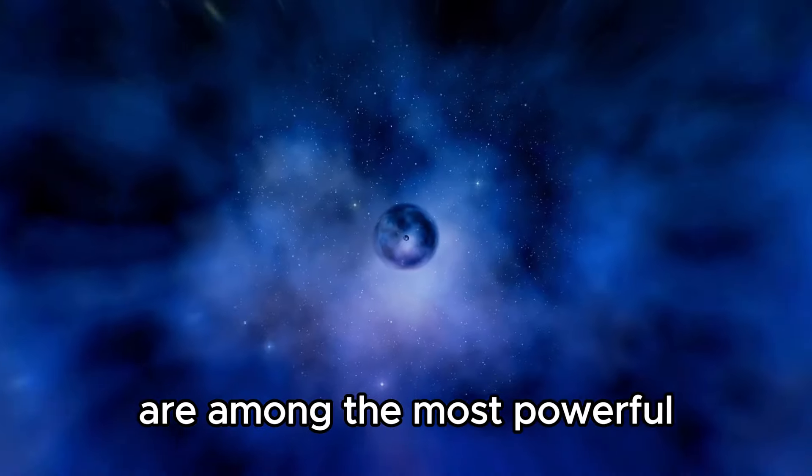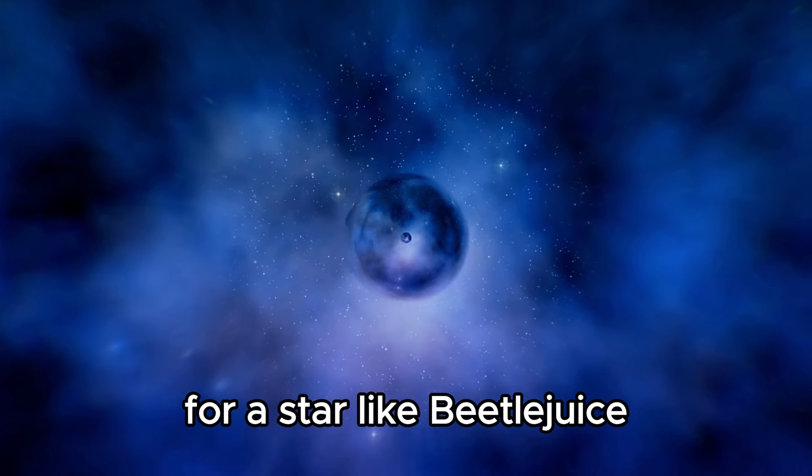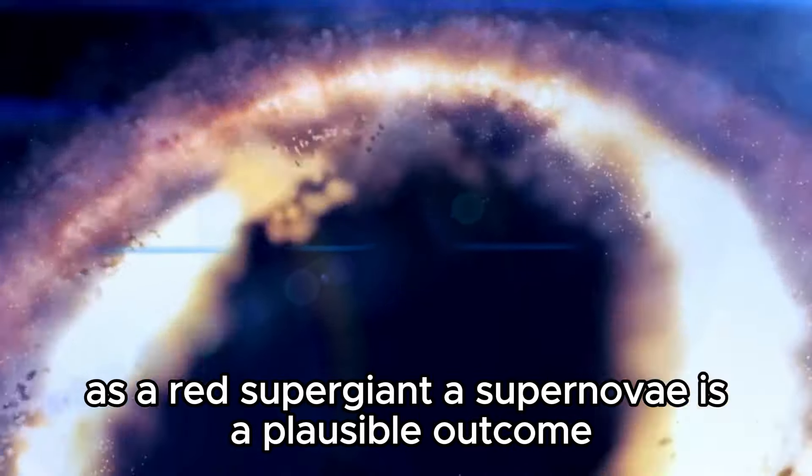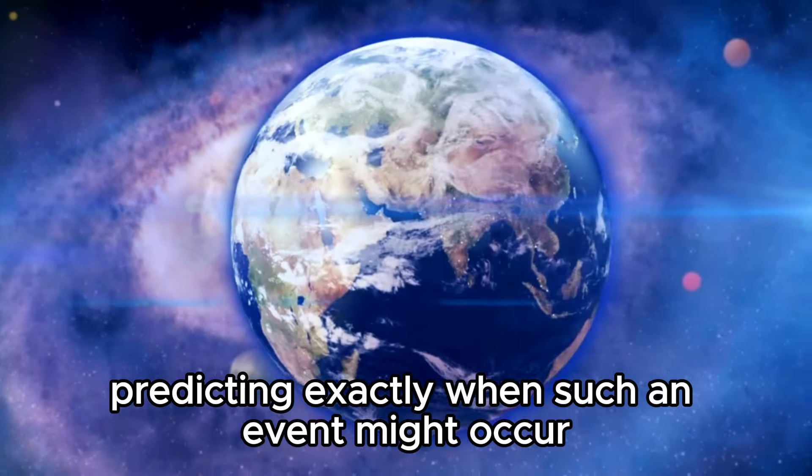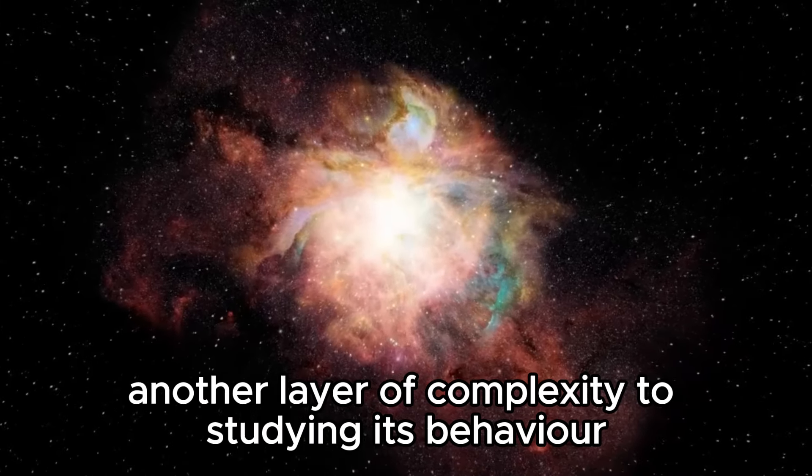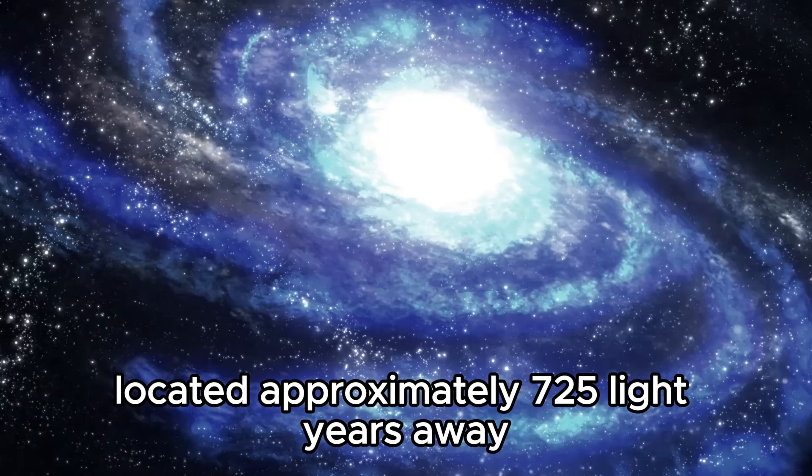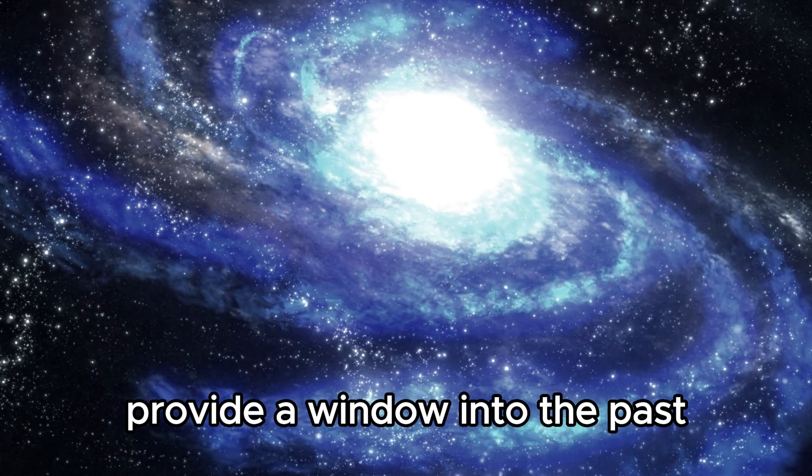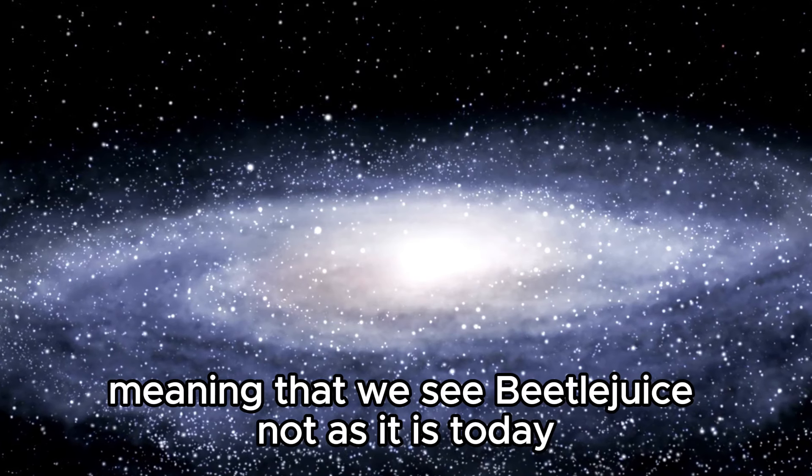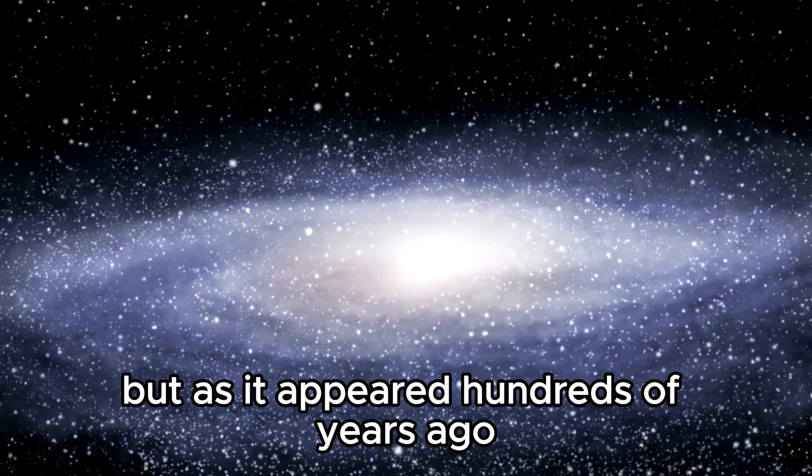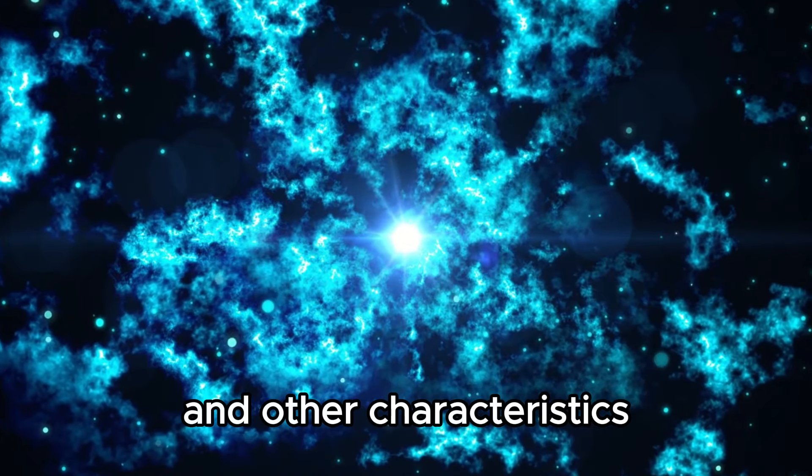Supernovae are among the most powerful and cataclysmic events in the universe, marking the explosive deaths of massive stars. For a star like Betelgeuse, which is nearing the end of its life cycle as a red supergiant, a supernova is a plausible outcome. However, predicting exactly when such an event might occur is challenging. Betelgeuse's distance from Earth adds another layer of complexity to studying its behavior. Located approximately 725 light-years away in the constellation Orion, observations of Betelgeuse provide a window into the past. Light from the star takes over seven centuries to reach us, meaning that we see Betelgeuse not as it is today, but as it appeared hundreds of years ago. This time delay complicates efforts to monitor and understand rapid changes in the star's brightness and other characteristics.